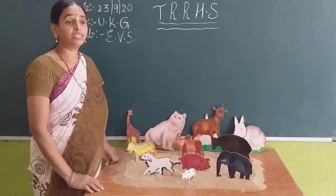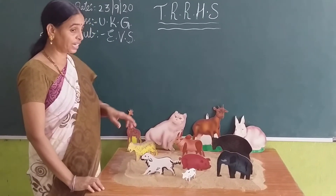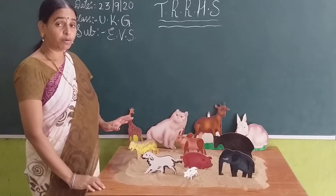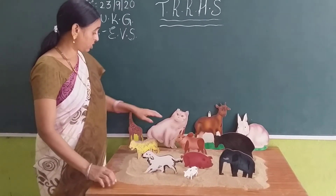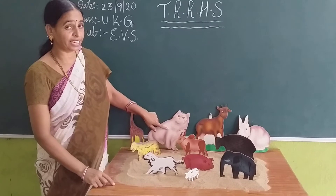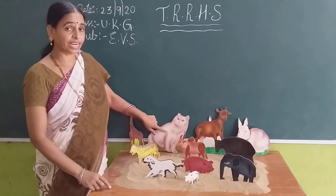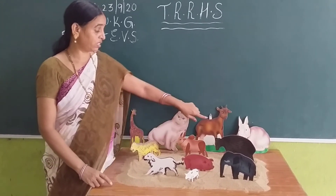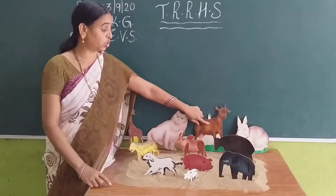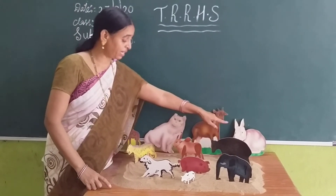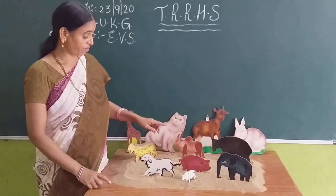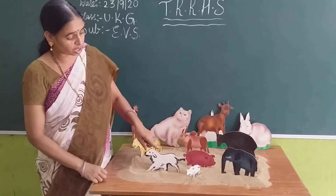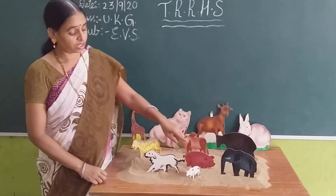We see these animals in our surroundings. Look at them carefully and observe. This is a cat. Our surrounding animals: cat, goat, rabbit, ox, pig, dog, cow.